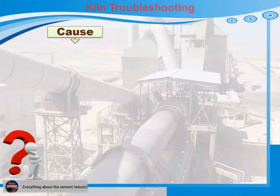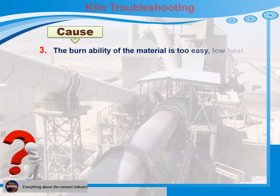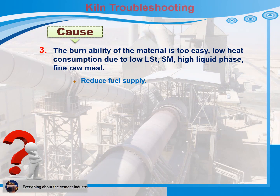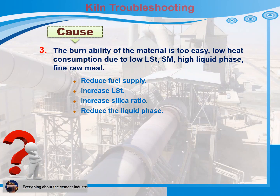Cause 3: The burnability of the material is too easy — low heat consumption due to low lime saturation temp and silica module, high liquid phase and fine raw meal. Recommendations for action: 1) Reduce fuel supply. 2) Increase lime saturation temp. 3) Increase silica ratio. 4) Reduce the liquid phase. 5) Grind the raw meal coarser.